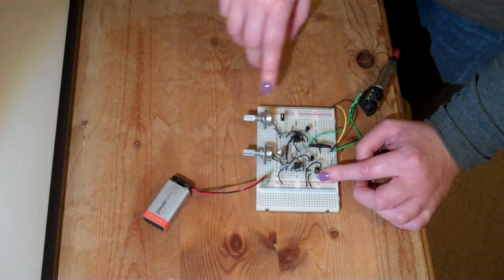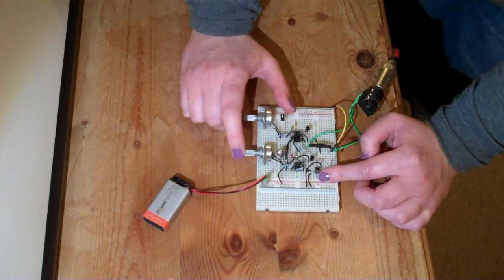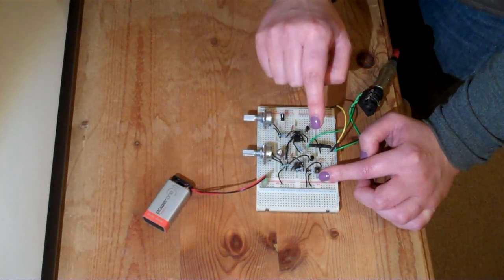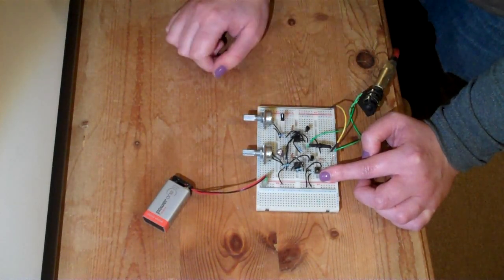What I've also got on the circuit are these two potentiometers. This potentiometer I'm using to control the length of the attack and release of the envelope itself and then this other potentiometer I'm using to control the pitch of our audio oscillator.